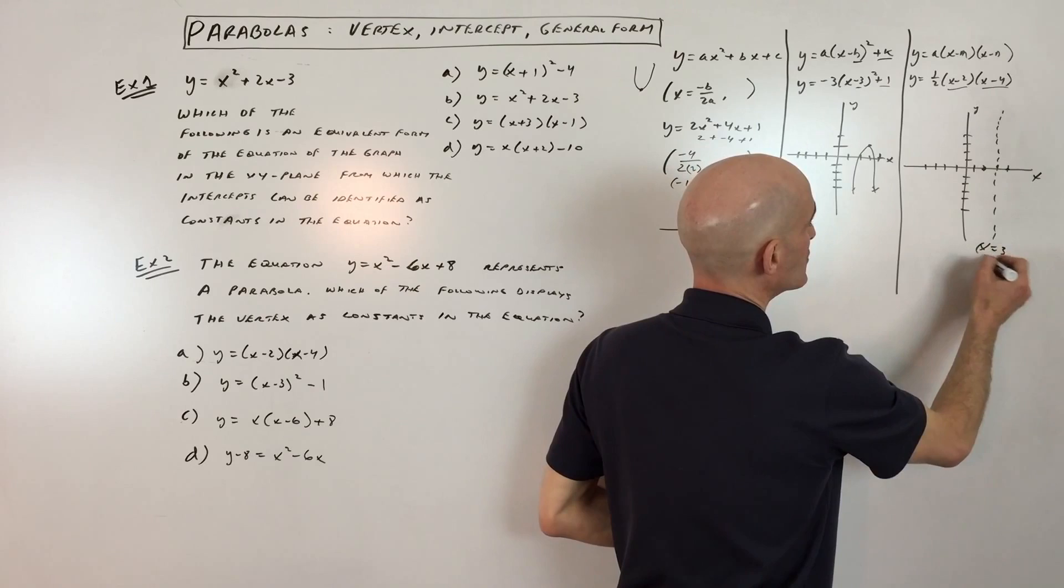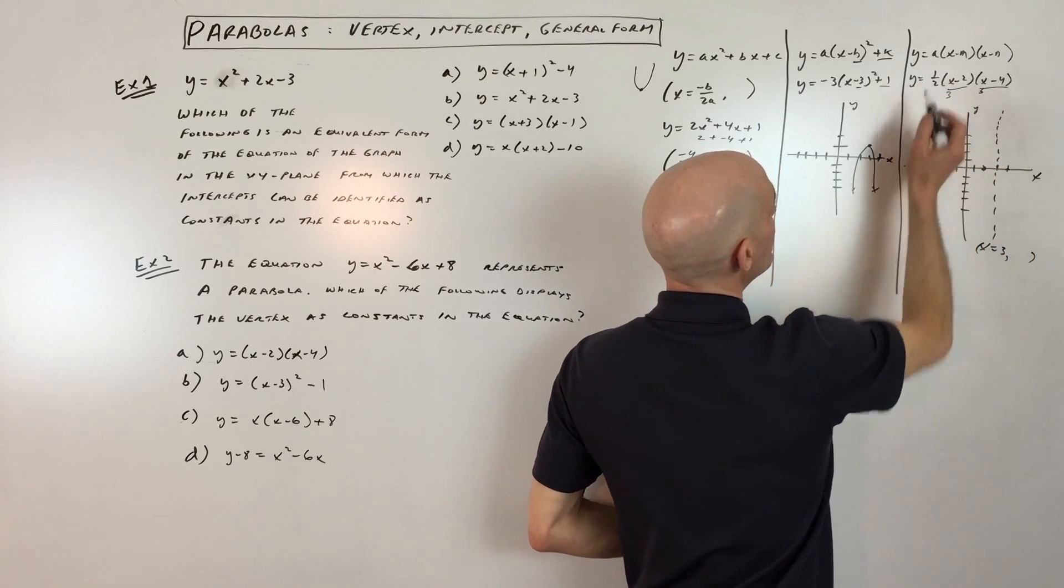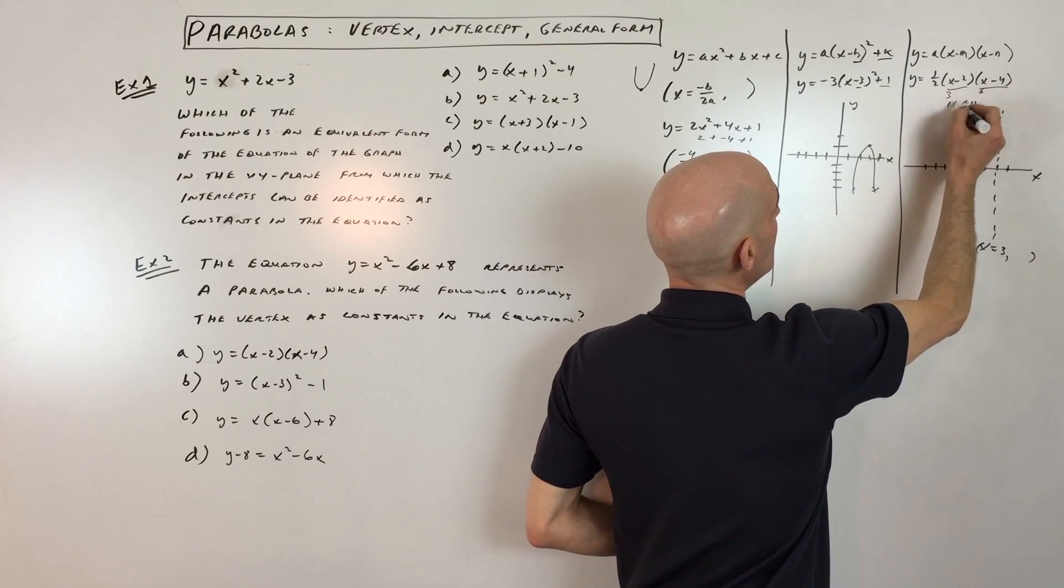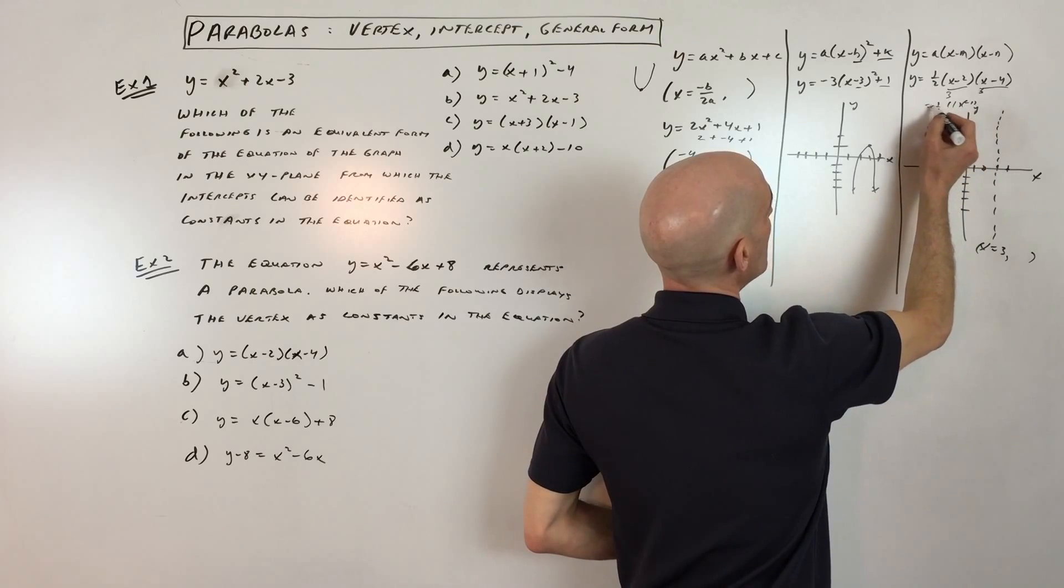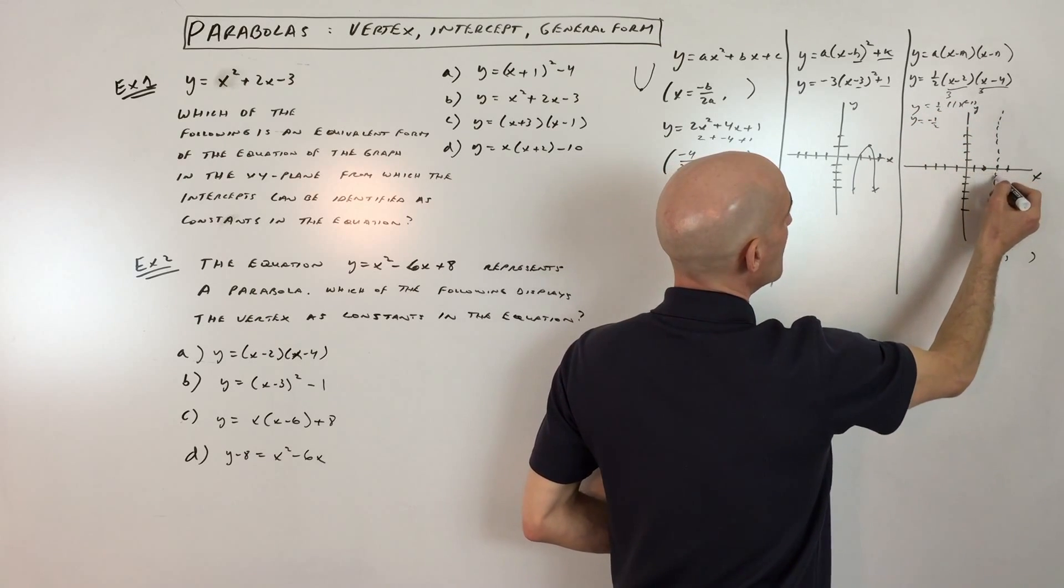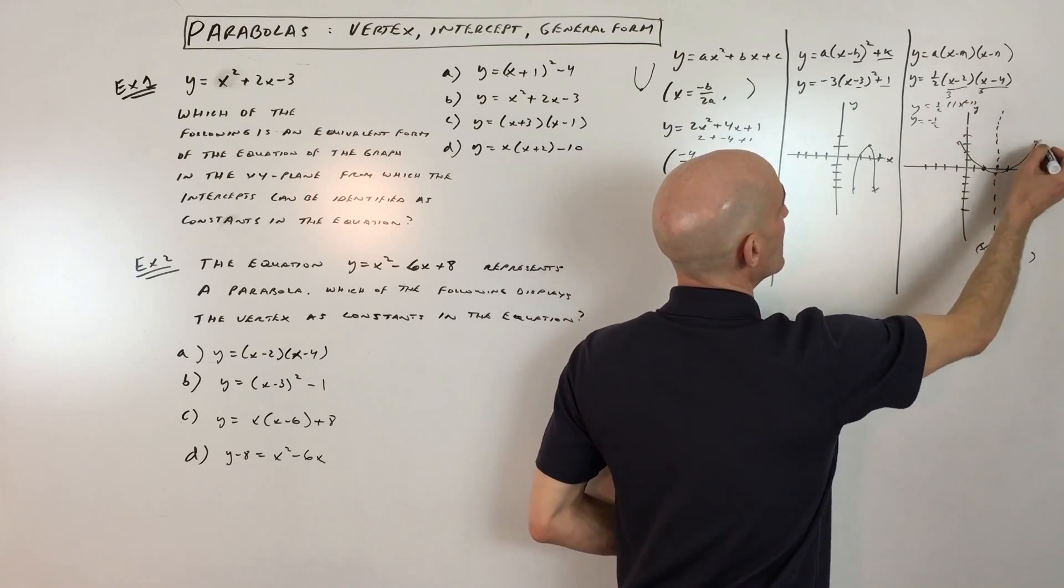It's also going to be the x-coordinate of your vertex. So in this case, that's x equals 3. By putting 3 back into our equation, we can solve for the y-coordinate of the vertex. So let's do that. 3 minus 2 is 1. 3 minus 4 is negative 1. And times 1 half, if we multiply that all out, we get y equals negative 1 half. So this is going to be at 3 negative 1 half right there. And you can see there's our parabola like so.